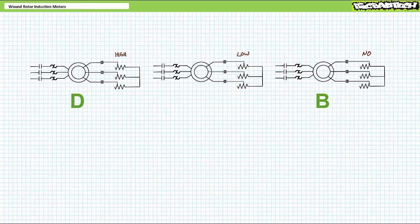Unlike the bank of fixed starting resistors intended for intermittent operation discussed previously, if the variable resistors are designed for continuous operation, this configuration — sometimes known as a regulator — also allows a primitive means of speed control.